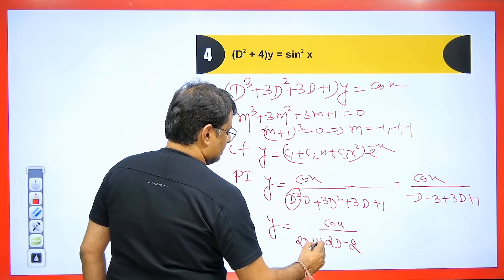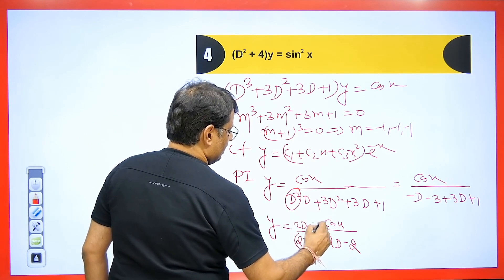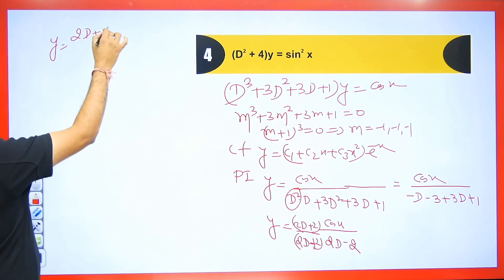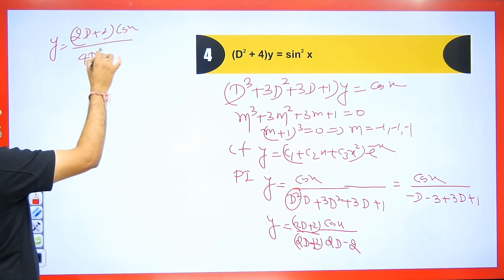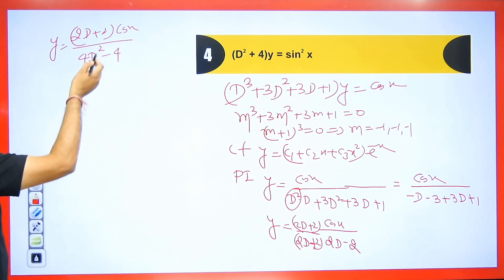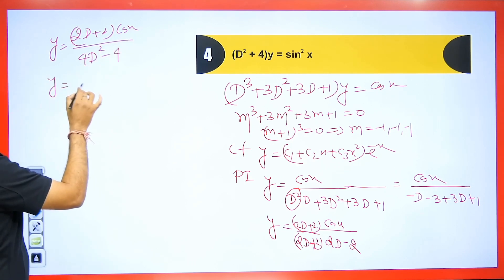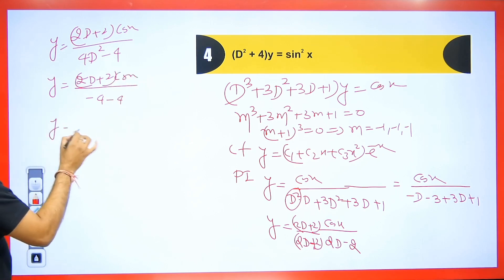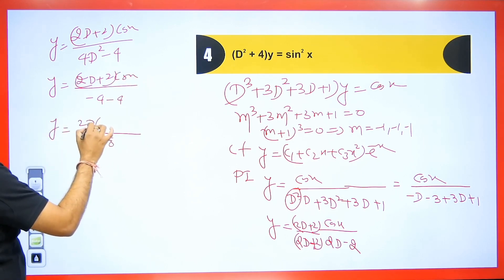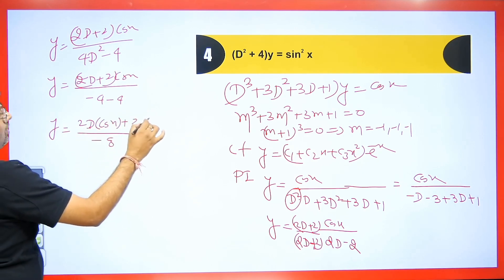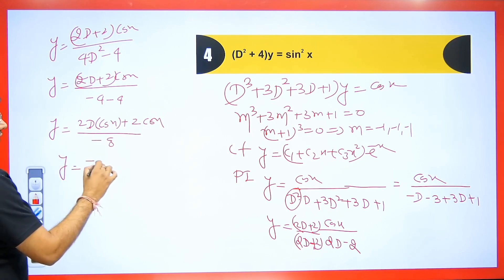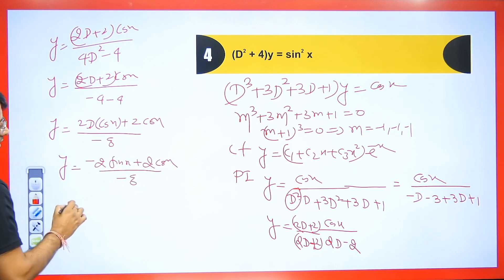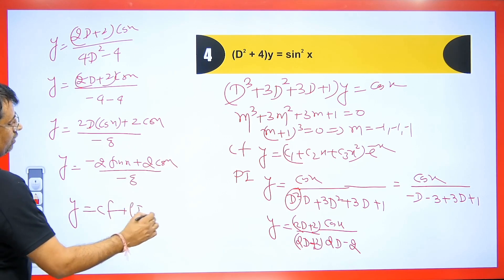Multiply numerator and denominator by (2D + 2). In the numerator: (2D + 2)cos x. In the denominator: 4D² − 4. Replace D² = −1: 4(−1) − 4 = −8. Since the differentiation of cos x is −sin x, 2D·cos x = −2sin x. So PI = (−2sin x + 2cos x) / (−8). Final answer: CF + PI.